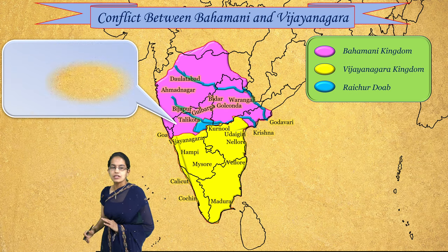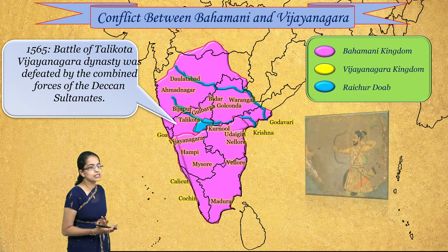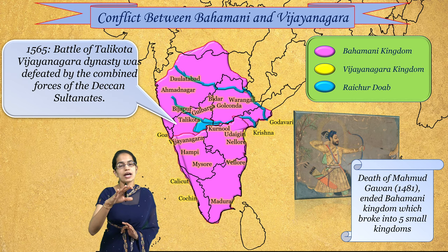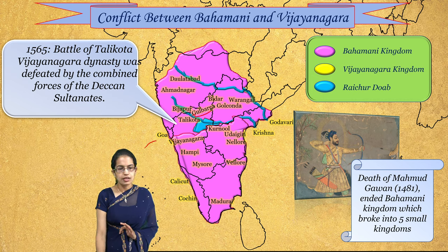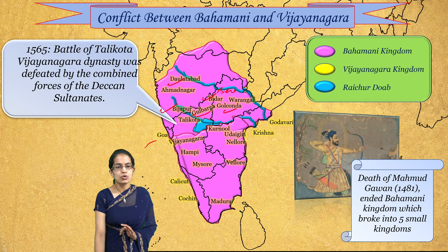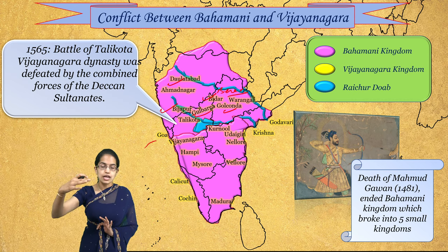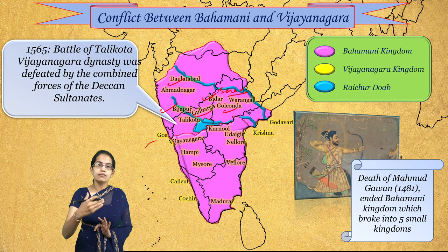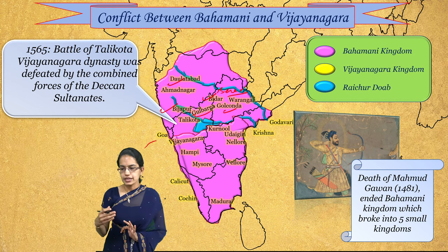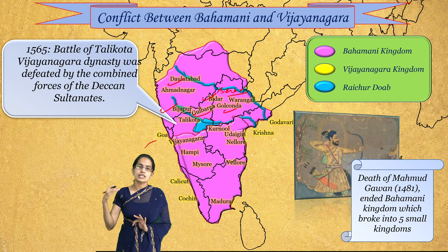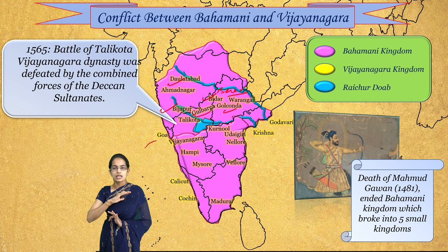The disintegration of both kingdoms is crucial to understand. The Battle of Talikota occurred in 1565. From 1527 onwards, the Bahamani empire had dissociated into five small kingdoms: Bidar, Golconda, Ahmadnagar, Bijapur, and Berar. The sultans of these five kingdoms united against the Vijayanagar empire. At that time, Aliya Rama Raya was in power in Vijayanagar and was executed. The combined forces of the Deccan sultans annexed the entire region, bringing the Vijayanagar empire to an end.